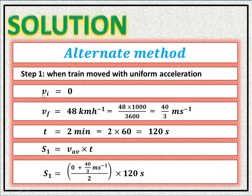At that time, its initial velocity was zero. Its final velocity was 48 km/h, which we convert: 48 × 1000/3600 = 40/3 meters per second, approximately 13.33 m/s. Time is 2 minutes, converted to 120 seconds.